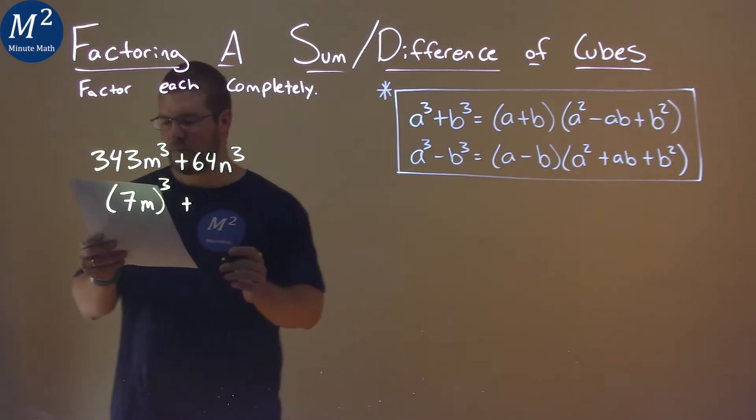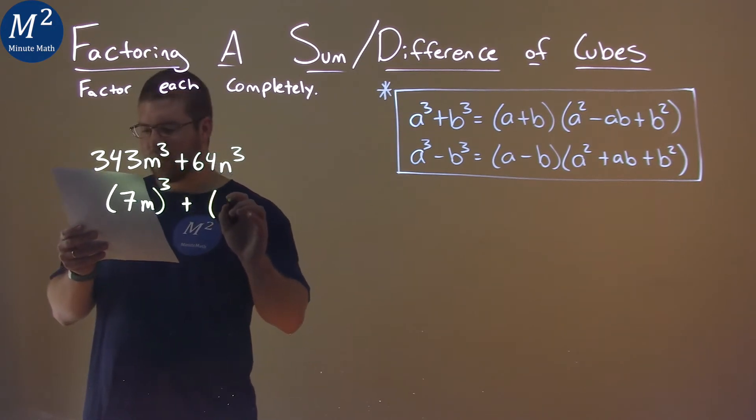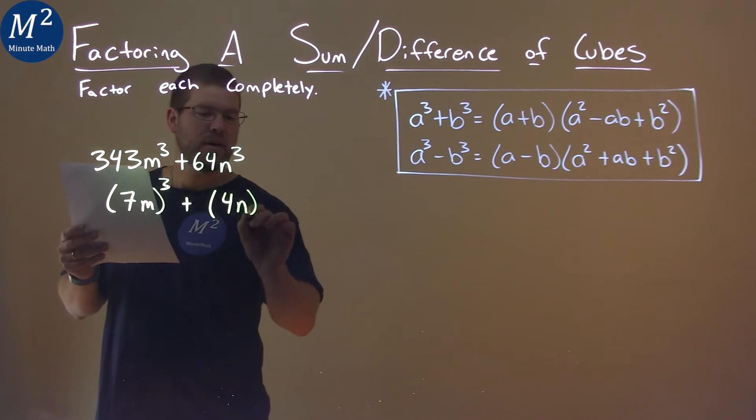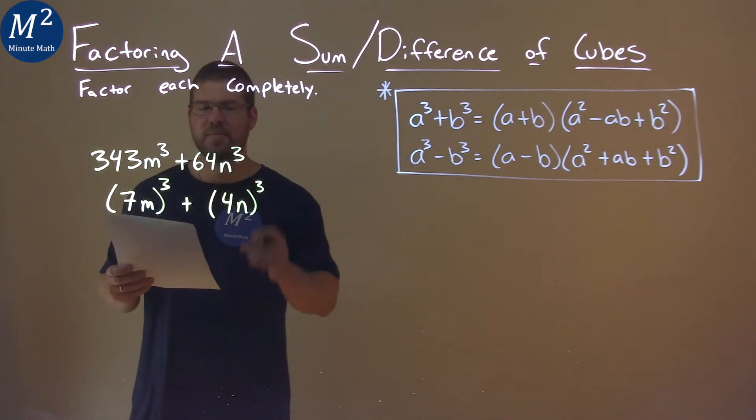What about 64n cubed? Well, 64 to the third, or 64 is the same thing as 4 to the third power. So if we have 4n all to the third power, that would equal 64n cubed.